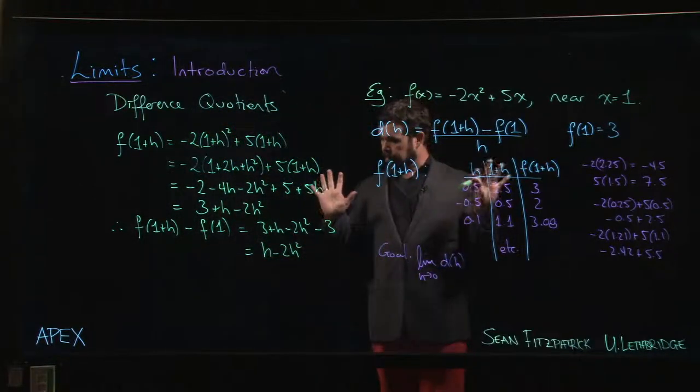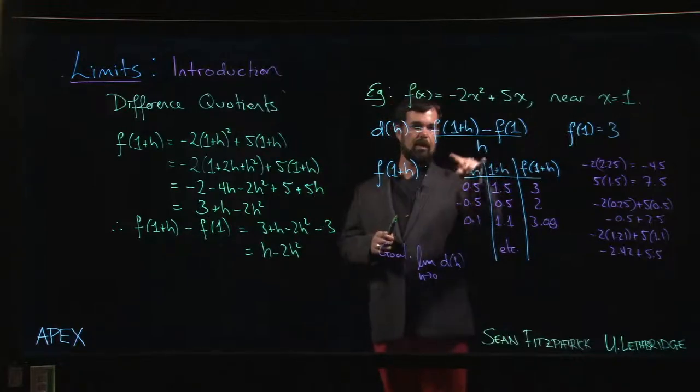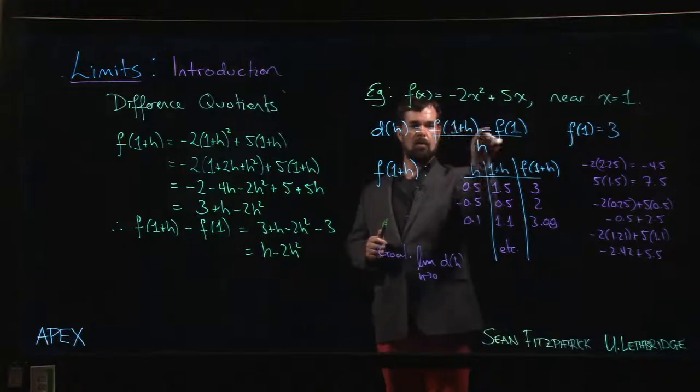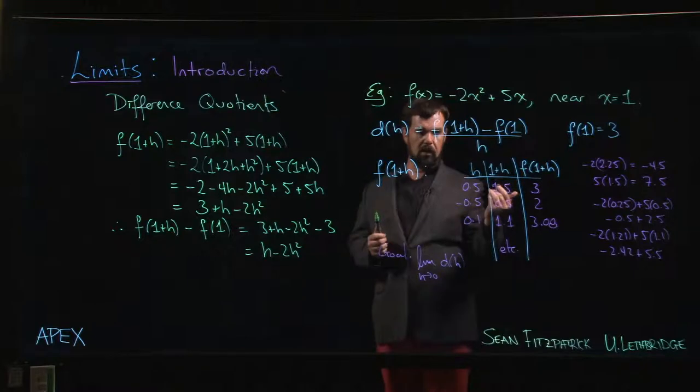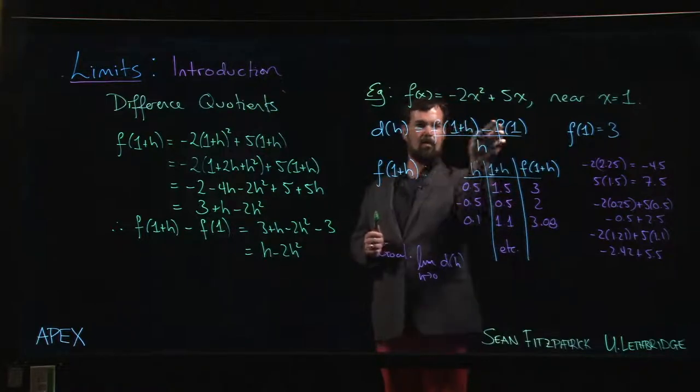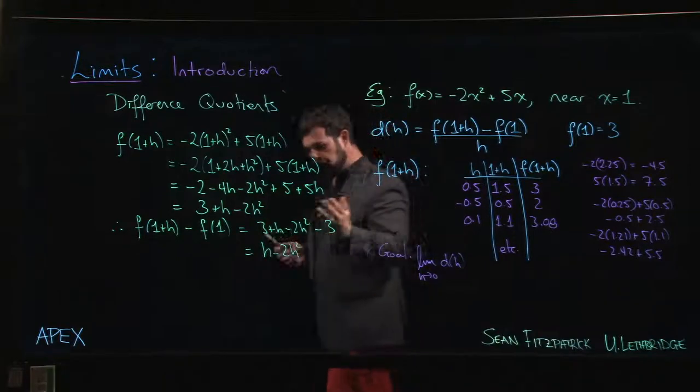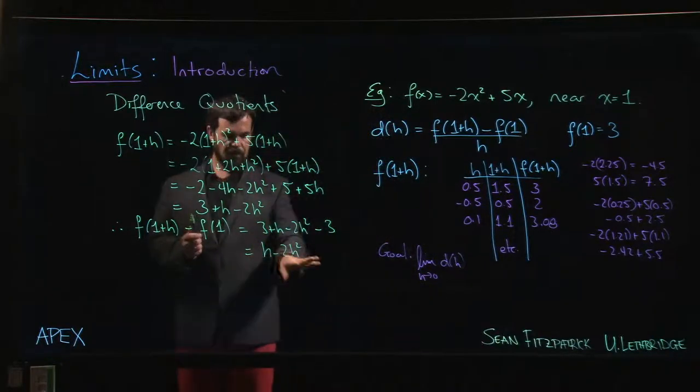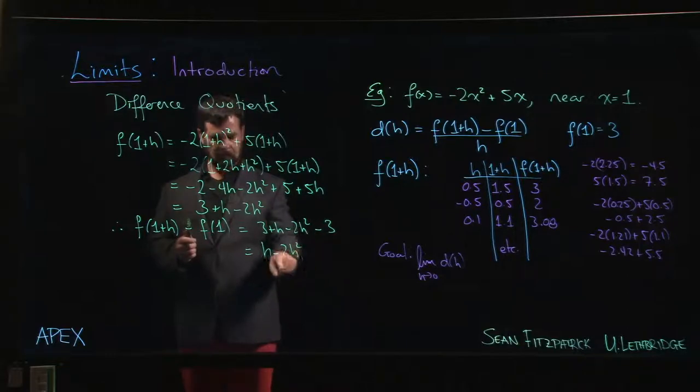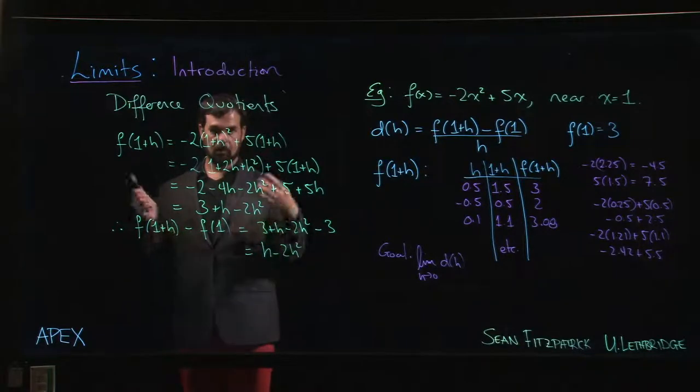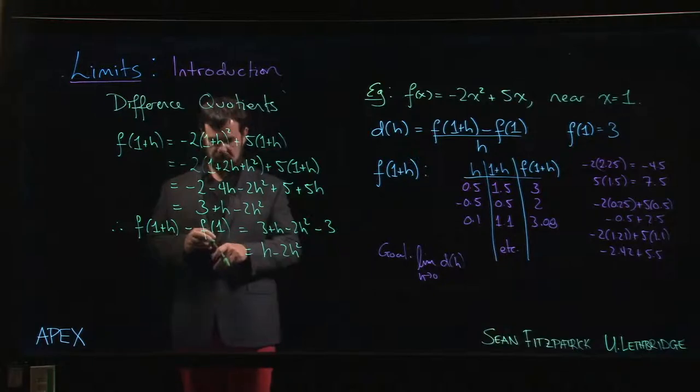Now, it's not a coincidence that those 3s cancelled. We knew from the outset that when H is 0, the numerator should be 0. f of 1 plus H subtract f of 1 - if I put H equal to 0, that's just f of 1 minus f of 1. So if I simplify the numerator, I should be left with something where all the terms depend on H. There's no constant term left over, because you can see that if I put H equal to 0, I get 0, as I should.